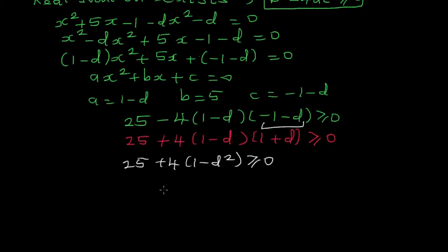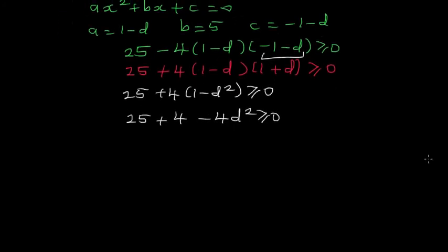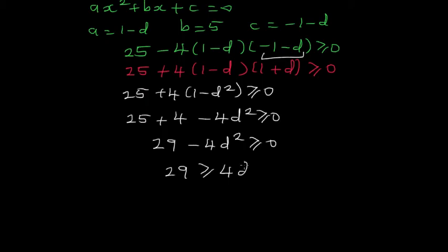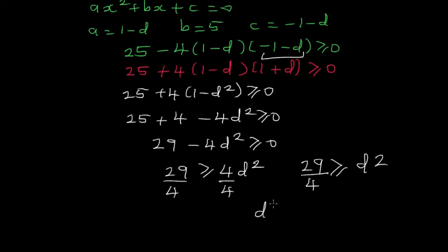Using the difference of squares, 1 minus d times 1 plus d equals 1 minus d squared. So this becomes 25 plus 4 minus 4d squared, which simplifies to 29 minus 4d squared, greater than or equal to 0. Therefore 29 is greater than or equal to 4d squared, and dividing both sides by 4 gives d squared less than or equal to 29 over 4.